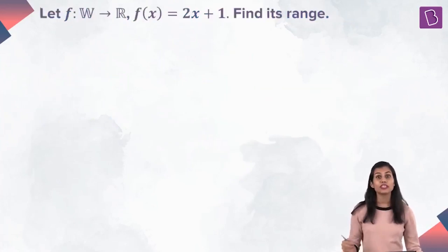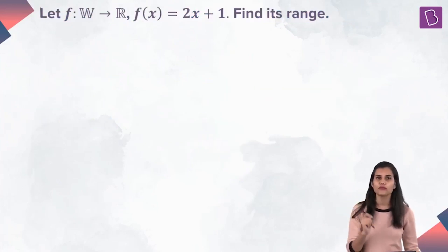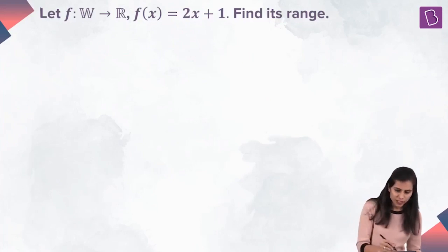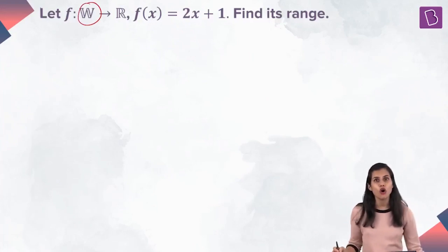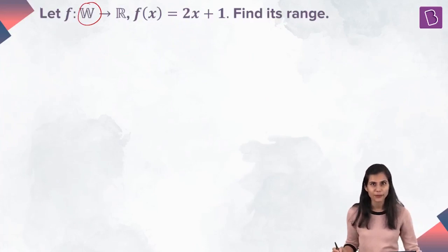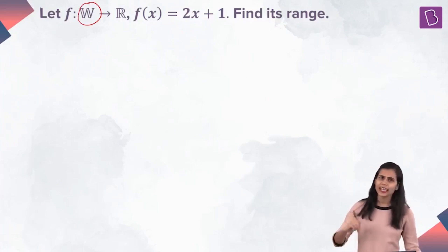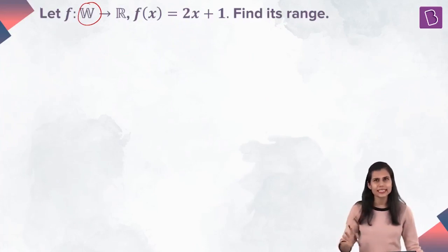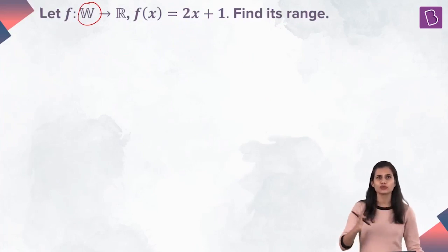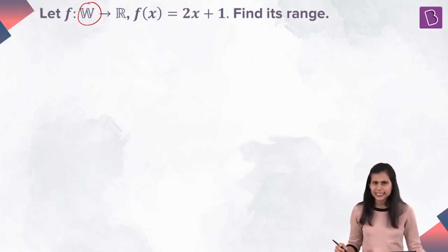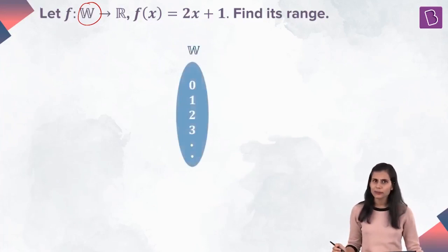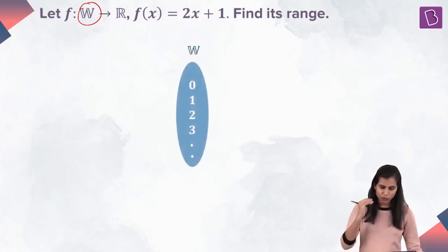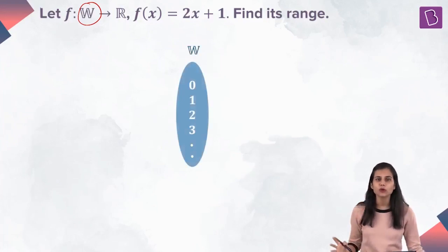Now I want to find the range of the same function defined by the rule f(x) = 2x + 1, but this time corresponding to the domain which is all the whole numbers. Again, because the set of whole numbers is a discrete set — 0, 1, 2, 3, 4, 5 and so on — let's again use the arrow diagram approach. So my domain is represented here: 0, 1, 2, 3, and so on.